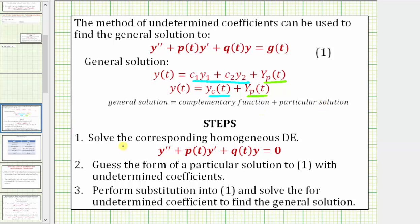The steps we'll follow are: step one, solve the corresponding homogeneous differential equation by setting g of t equal to zero — this gives us the complementary function y sub c of t. Step two, guess a form of a particular solution to the original differential equation with undetermined coefficients. Step three, using this function, perform substitution into the original differential equation and solve for the undetermined coefficients to find the general solution, which is the sum of the complementary function and a particular solution.